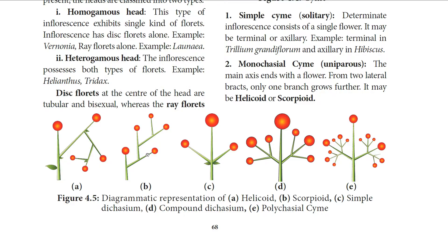In scorpioid inflorescence, the axis develops on alternate sides — if the first branch grows from the right side, the next grows from the left, then right again — so it often becomes a coiled structure. Example: Heliotropium.